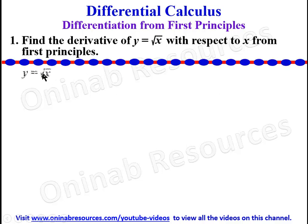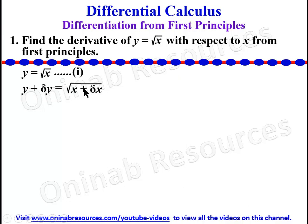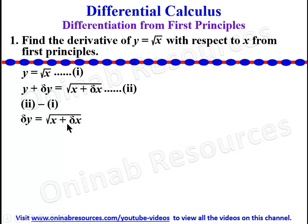So we bring in our function, we call it equation 1. Then again we increase y by delta y and increase x by delta x. So we have y plus delta y is equal to square root of x plus delta x. We call this equation 2. Now equation 2 minus equation 1, so y will go with y, and we'll be left with delta y equal to root x plus delta x minus root x.